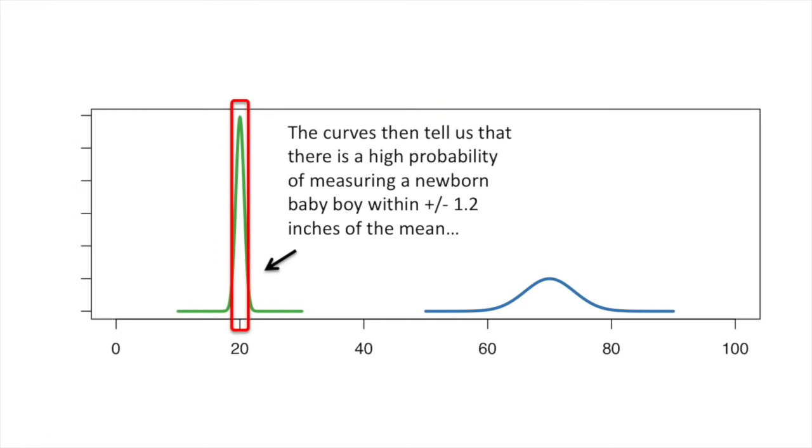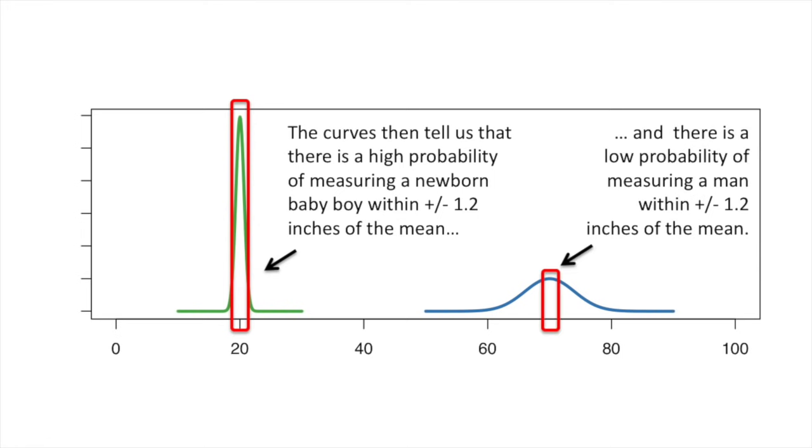The curves then tell us that there is a high probability of measuring a newborn baby boy within plus or minus 1.2 inches of the mean. And there is a low probability of measuring a man within plus or minus 1.2 inches of the mean.